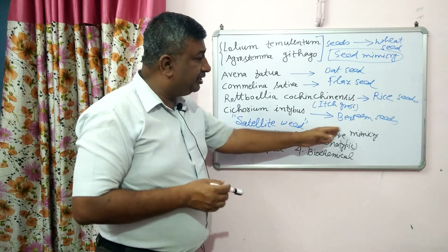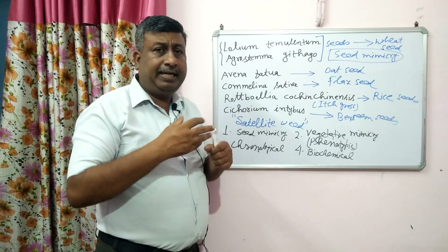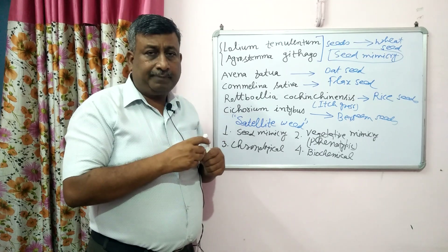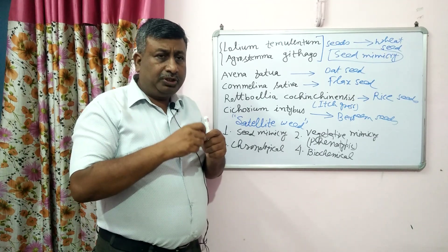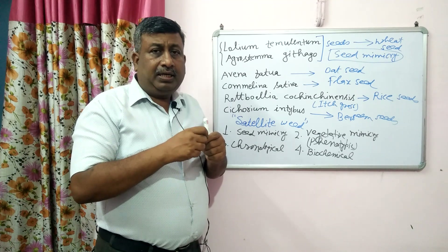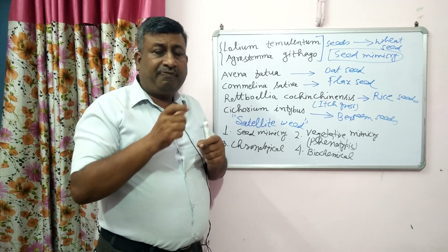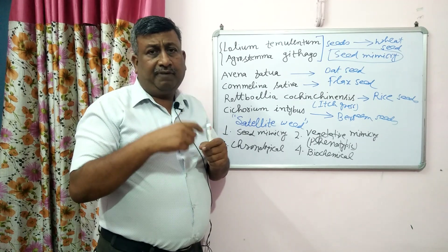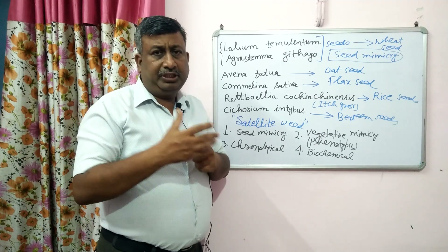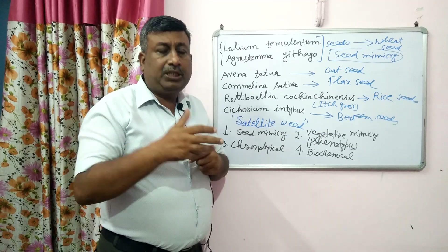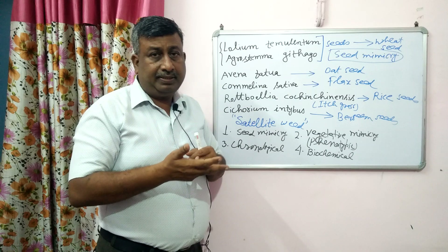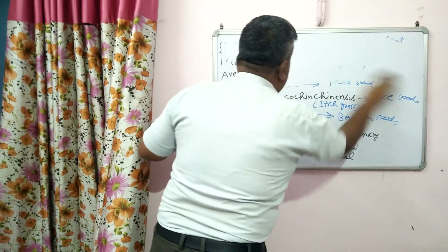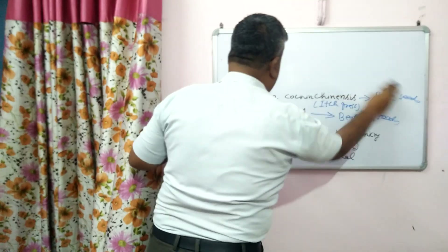In case of vegetative mimicry, shoot, leaf, and stem look like the crop. For example, Phalaris minor — its leaf, shoot, tillering, and growth resemble the wheat crop. Similarly, Phalaris paradoxa also resembles wheat. In case of rice, Echinochloa species are very common examples of vegetative mimicry — Echinochloa colona and Echinochloa crus-galli.